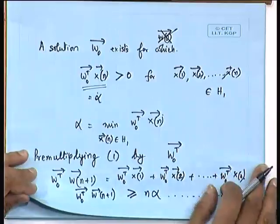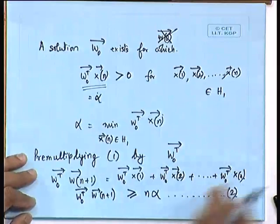So w*^T W_{n+1} must be greater than or equal to nα. There is another route by which we can try to bound things. This is a very interesting bound that we have got.